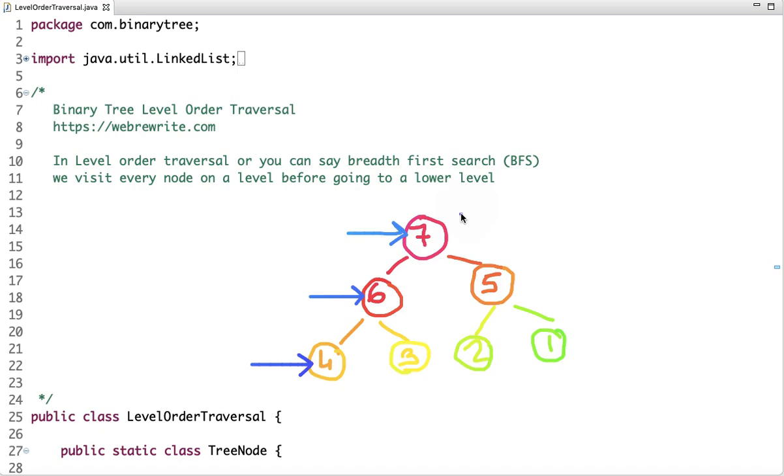So if you see the output of level order traversal is first we print this node 7, then we visit at this level and print both the nodes which is 6 and 5, then we visit the next level and print all these nodes which is 4, 3, 2 and 1.